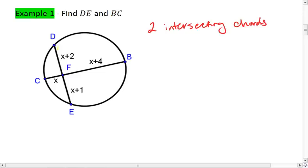We break our first chord into two segments. We see that X plus 2 times X plus 1 is going to equal the product of the pieces of our second chord. X squared, which is X times X plus 4.